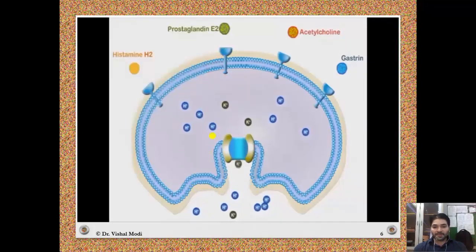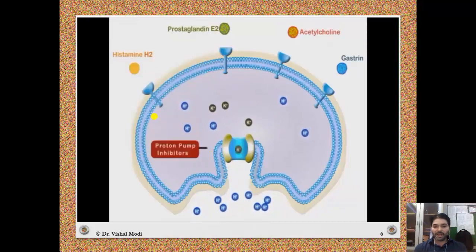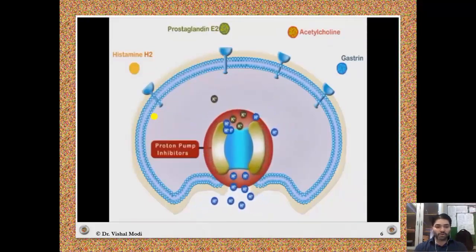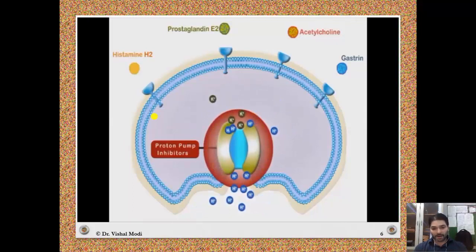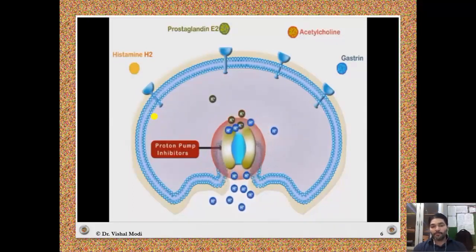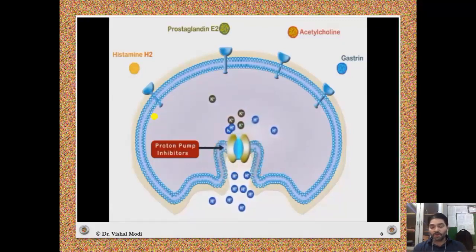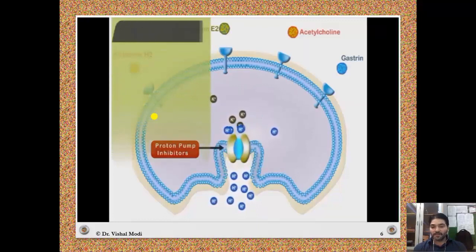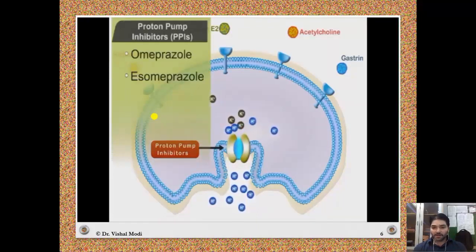In the proton pump inhibitors, there is an exchange of protons with K+, and H+ goes to the lumen of the stomach. Proton pump inhibitors inhibit the exchange of protons with potassium, and that is why they produce anti-secretory effects.